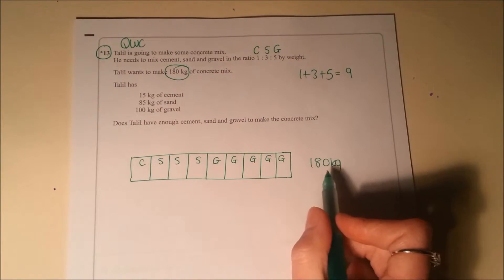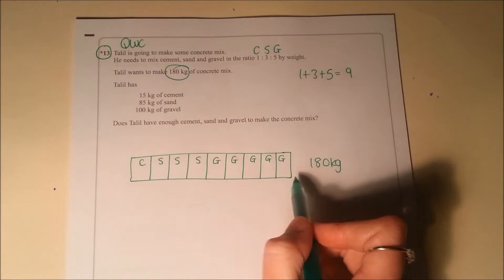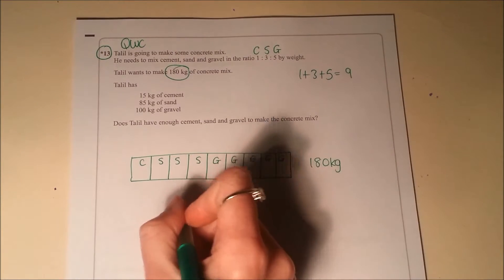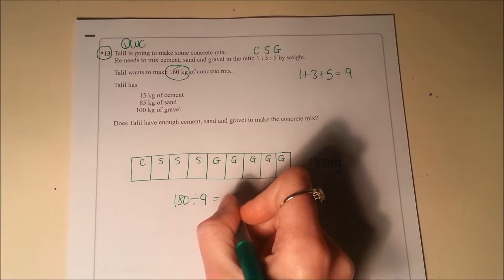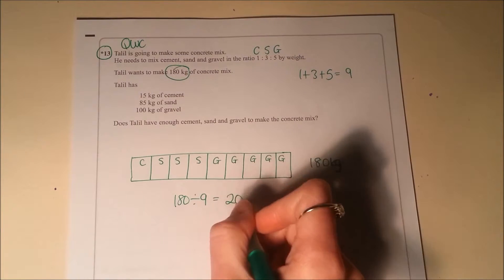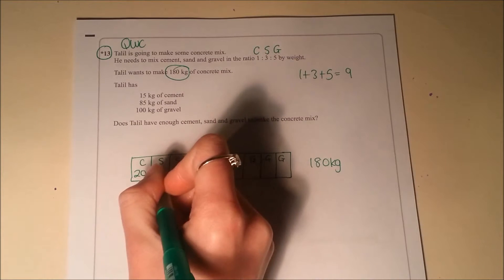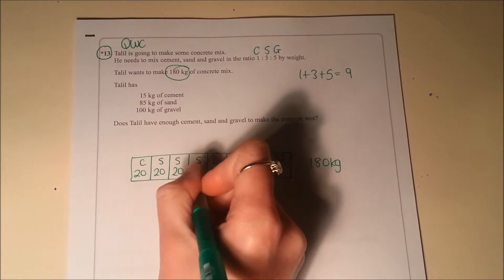OK, the total thing is worth 180, so we've got 9 pieces there. So to work out the size of one piece we need to divide 180 by 9. Well, 18 divided by 9 is 2, so 180 divided by 9 is 20. So each one of these is worth 20.